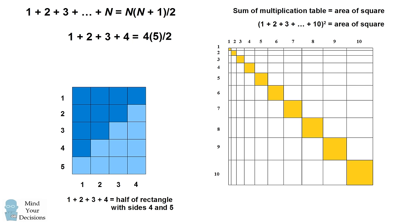We can generalize this pattern that the sum of the numbers from 1 to n will also end up with a rectangle that has sides n and n plus 1, and we want half of that. So the sum of the numbers from 1 to n will be n times n plus 1 over 2.